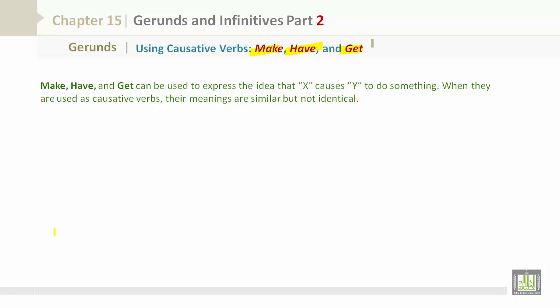Make, Have, and Get can be used to express the idea that X causes Y to do something. When they are used as causative verbs, their meanings are similar, but not identical.